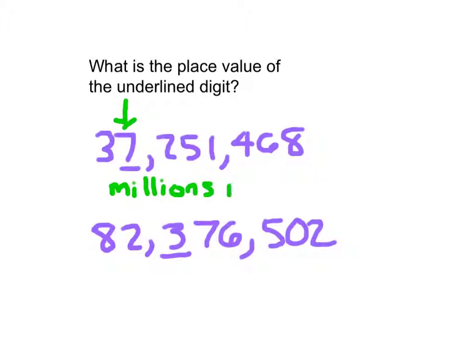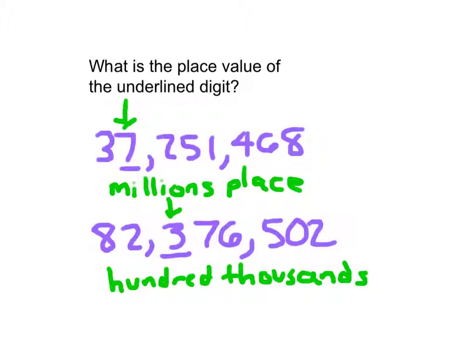Some students will accidentally call it the 7,000,000 place. It is not called the 7,000,000 place. It's called the millions place. In the other number, what is that place value then? What do you call that place? That is the 100,000,000 place. That place value is the 100,000,000 place.